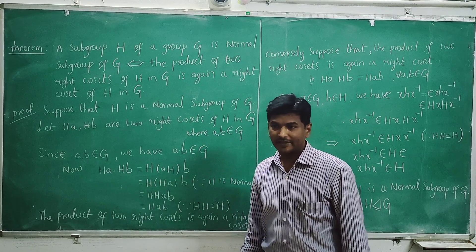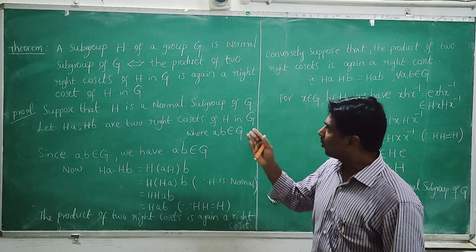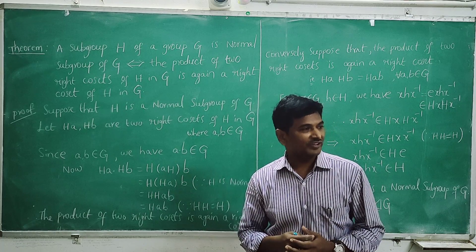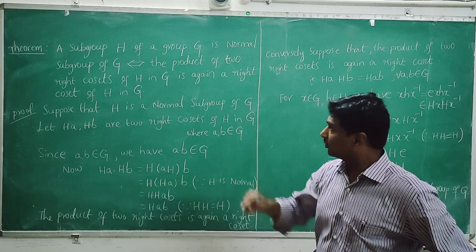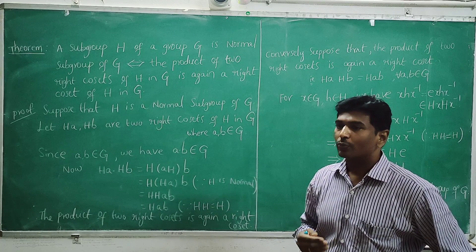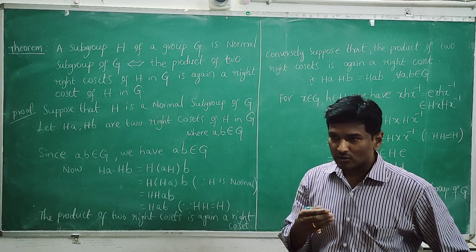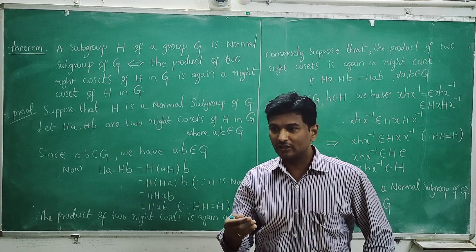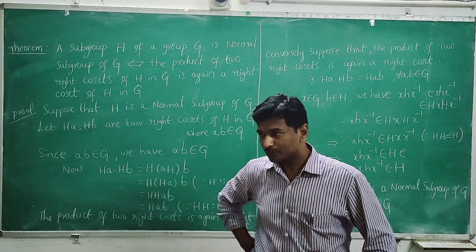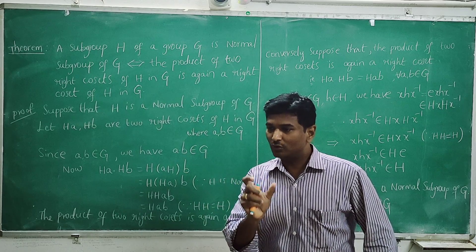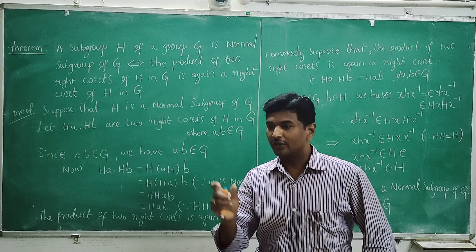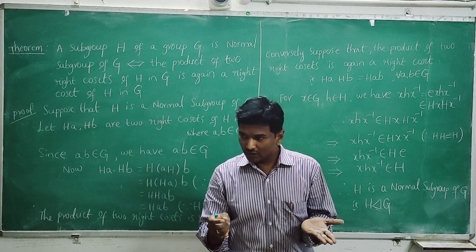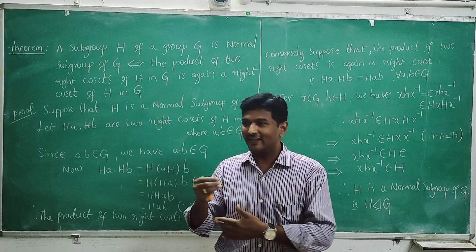The subgroup H of the group G is a normal subgroup of G if and only if the product of two right cosets of H in G is again a right coset of H in G. This means: take Ha times Hb gives another right coset.